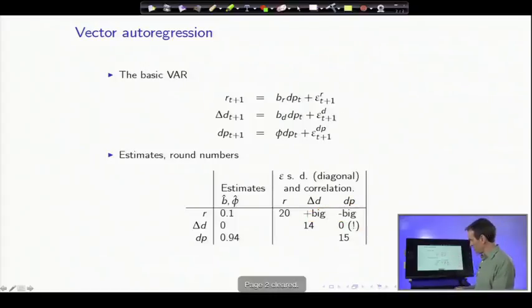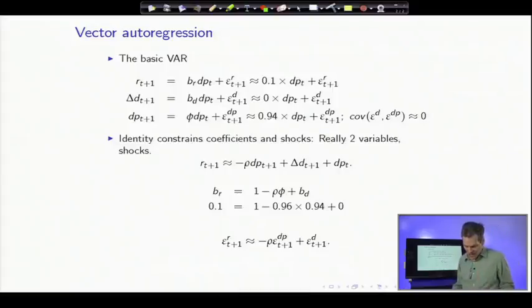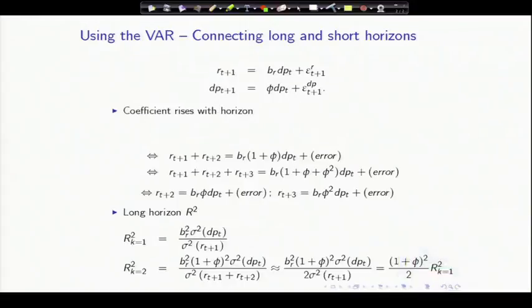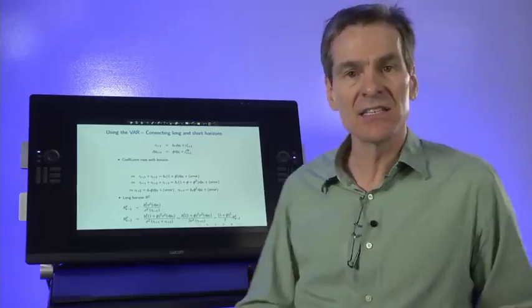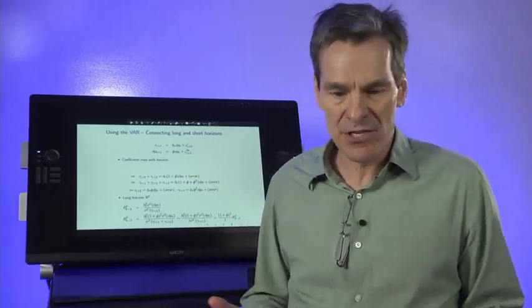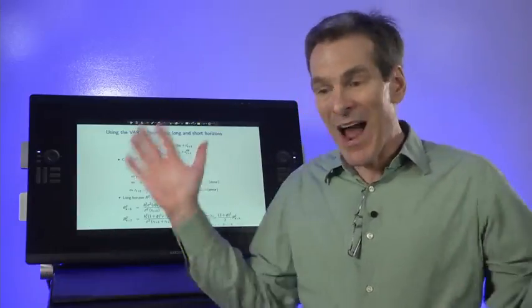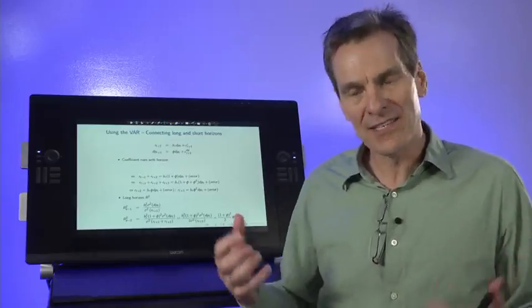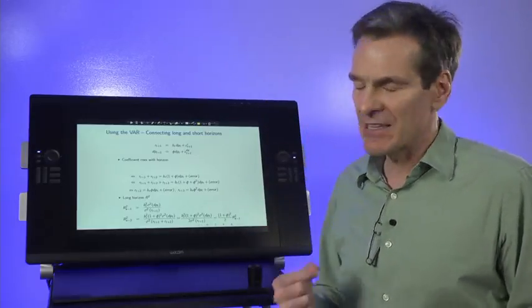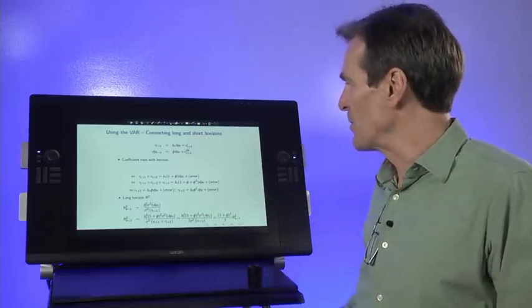So what do we have? We have a simple vector autoregression and some identities that stem from the fact that we only really have two variables. We can use that now to answer some of the most important questions and to understand where some of the facts we've seen have come from. The first fact I want to show you is connecting long and short horizons. It looked like in our tables, and originally in the literature, the short horizons look kind of boring. We look to long horizons and, wow, look at those big R-squareds. So long horizon predictability seemed like it was some separate new phenomenon. But it's not when you look at the equations of this simple vector autoregression.